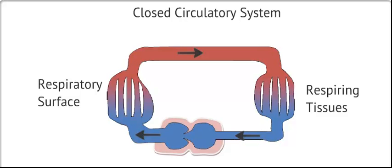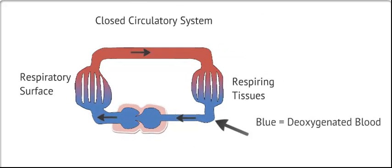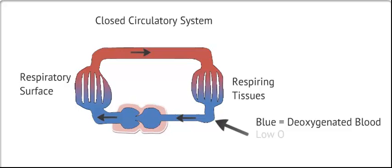The chemical composition of blood in these diagrams is represented by the color of the blood vessels. The blue coloration represents deoxygenated blood. This is blood with low levels of oxygen gas and high levels of CO2.